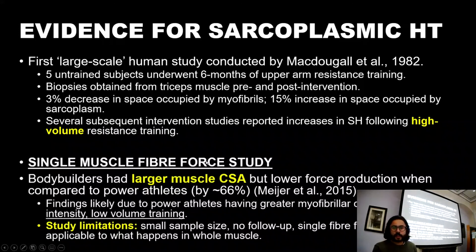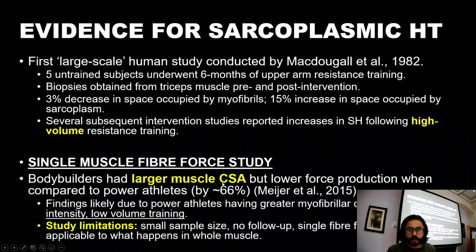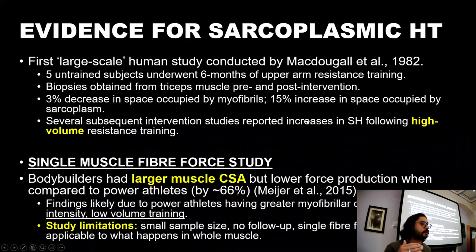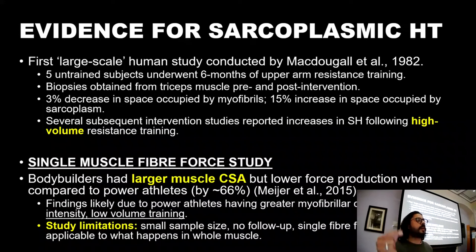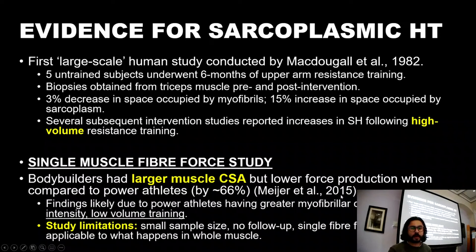Then there was the single muscle fiber study by Mayer and colleagues in 2015, which showed that bodybuilders had a larger cross-sectional area but lower force production compared to power athletes. This relates to the previous slide — although I concluded that bodybuilders can be as strong as power athletes, we have to consider this study carefully. It has been widely discussed online, and the figures are quite striking: lower force production by 66%, which is quite a large amount.